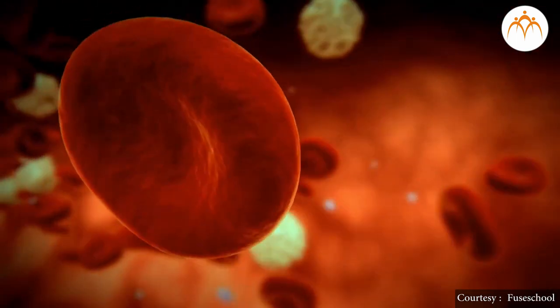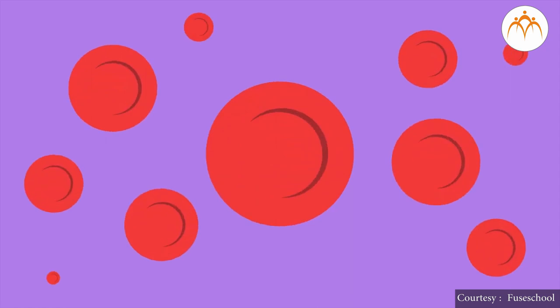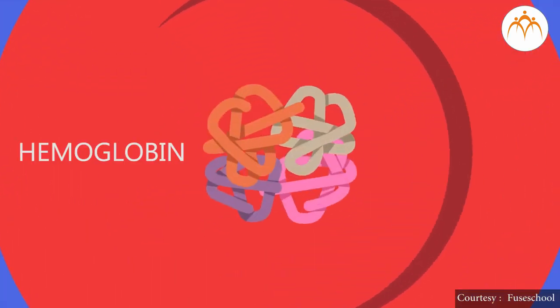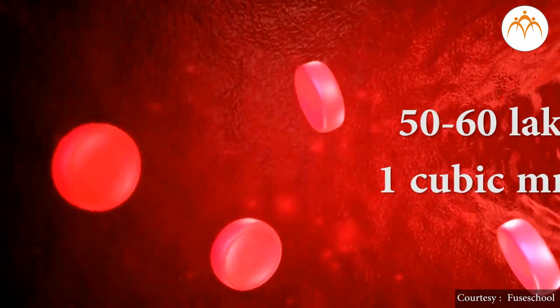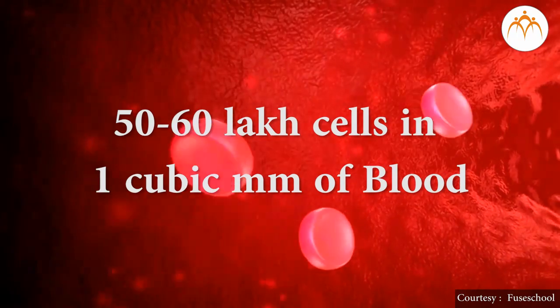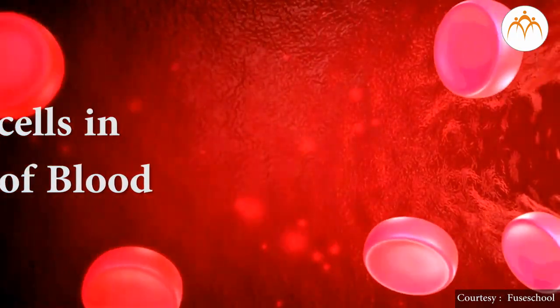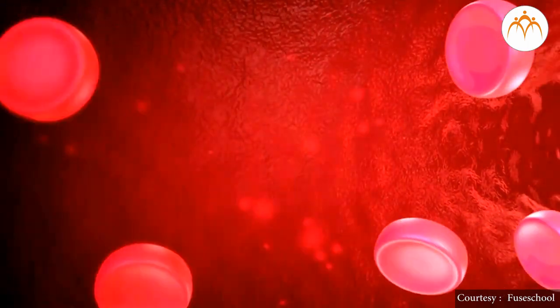Red blood cells, or erythrocytes, are rounded or circular cells without a nucleus. Our blood is dark red in color because of RBCs. RBCs are present in large numbers — 50 to 60 lakh cells in one cubic millimeter of blood. RBCs are produced in red bone marrow and live for about 100 to 120 days.